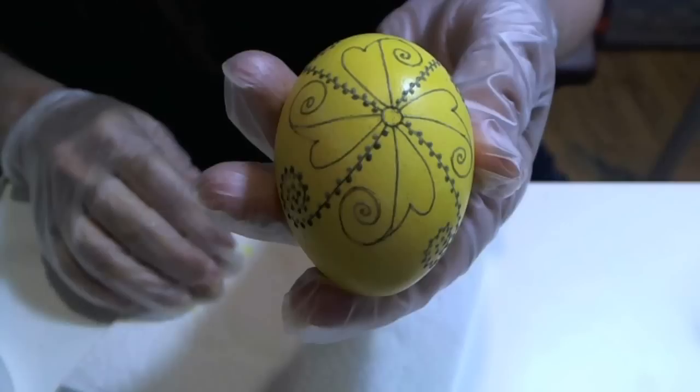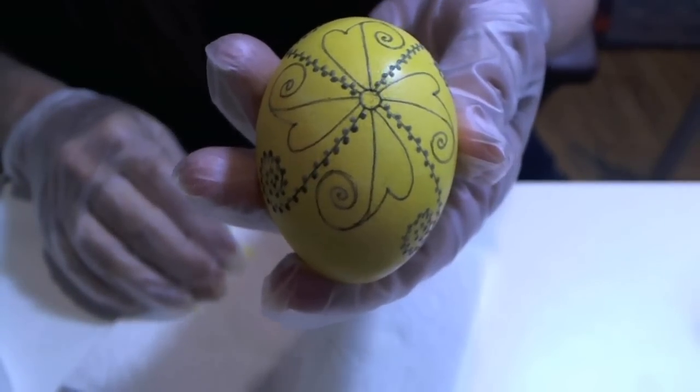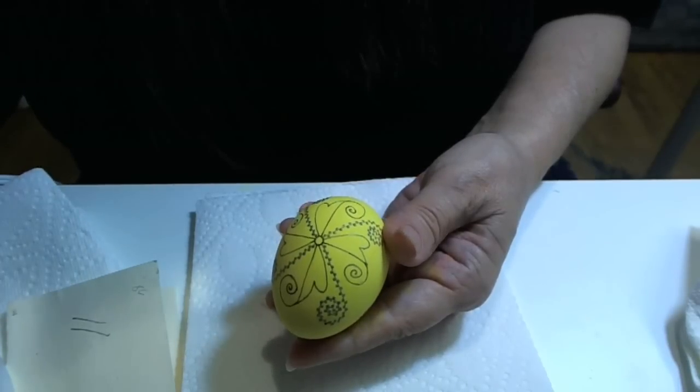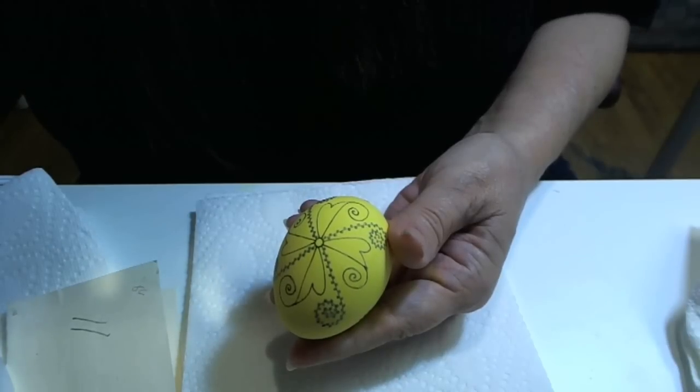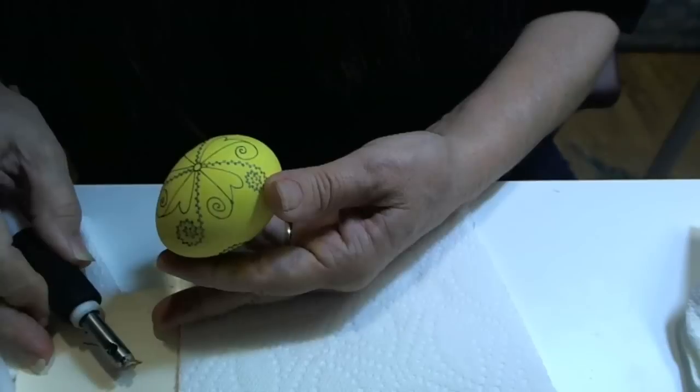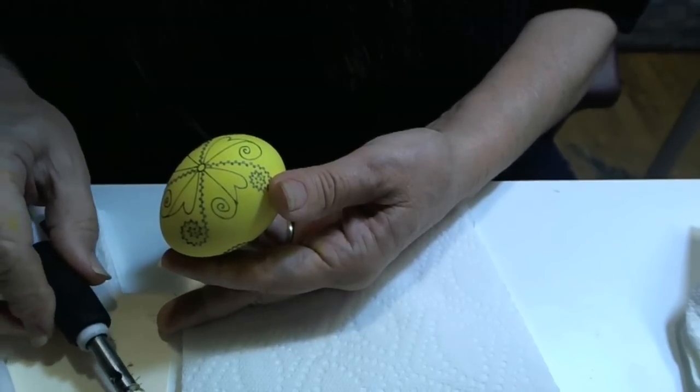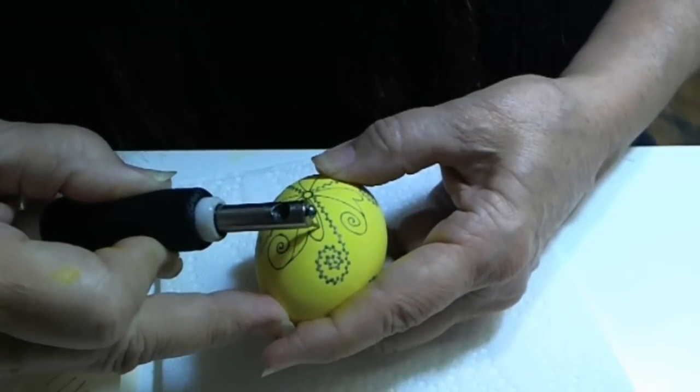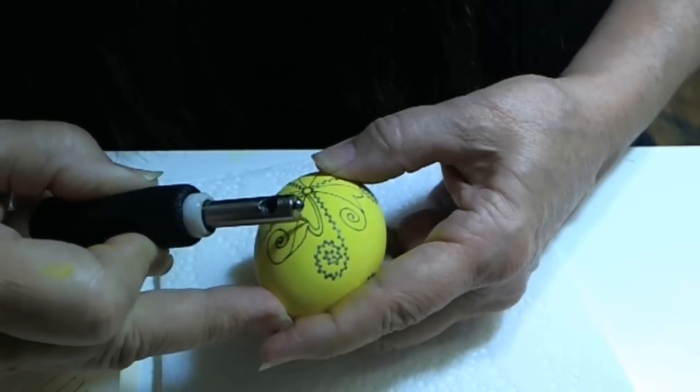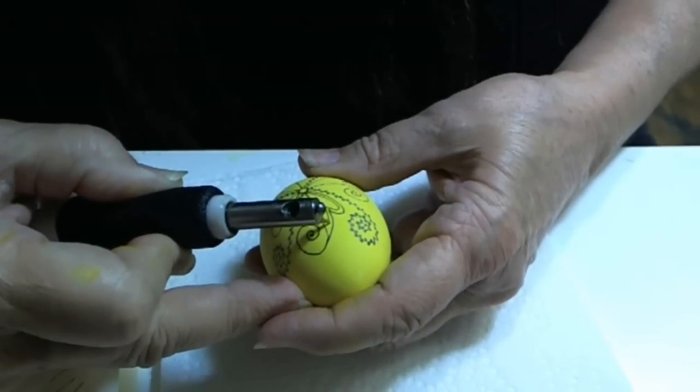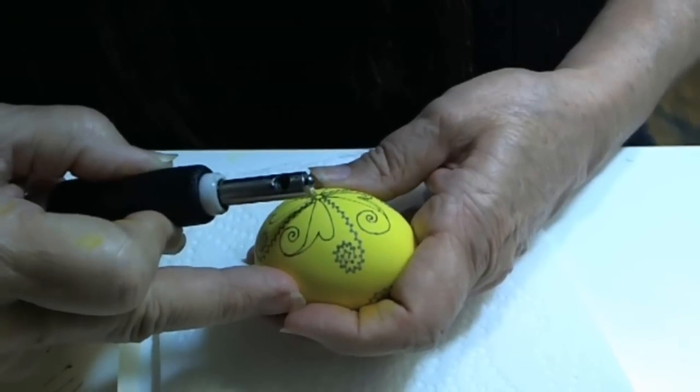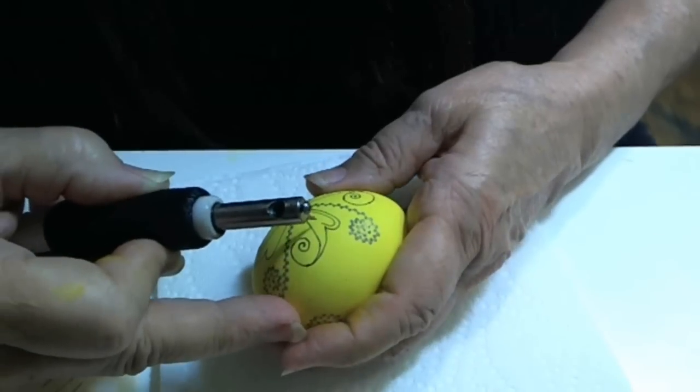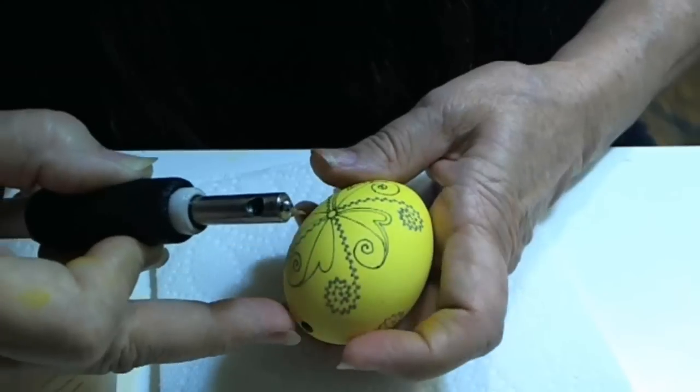Now that our egg is dry, it's time to begin waxing all the areas that I want to remain yellow. I'm ready to begin with continuing my design on this egg. Make sure the flow of my wax is working. I like to outline my work. So I try to follow my first line I made in each petal. And these lines will be yellow.